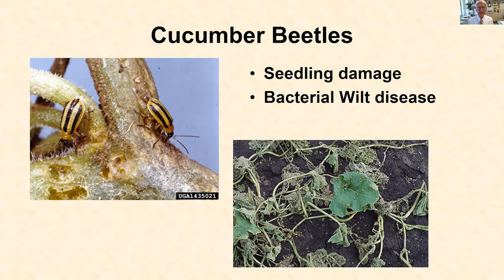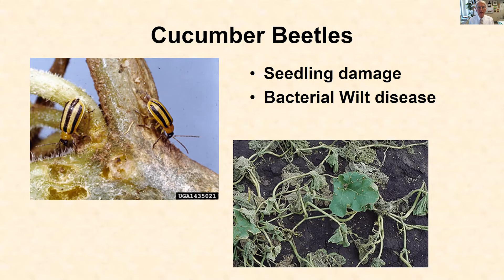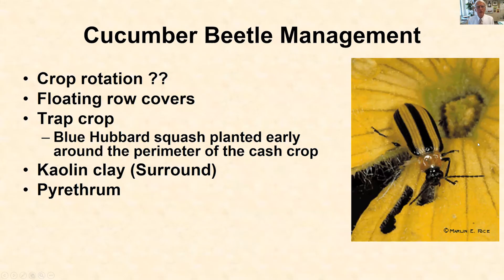The big worry with cucumber beetles is that they transmit bacterial wilt disease. They went into the winter with the bacterium in their gut, and as they feed, they slobber or defecate, putting that bacterium into the wounds of the plant. The plant will develop the bacterial disease slowly over the next three weeks to a month. When severe enough, the plant will wilt and die — sometimes just one runner. Bacterial wilt is the bigger of the two issues.